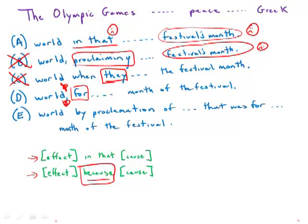Choice E is just a wordy, indirect monstrosity — 'world by proclamation of that was for the month of the festival.' E is just abysmal, a train wreck, so we eliminate that. We're not really happy with A, and D is the one that has no grammatical errors. It's clear, precise, and sleek — by far the strongest answer choice.